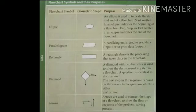Then, the third one is rectangle. Rectangle denotes the processing that takes place in the flowchart. Generally, we use to apply any type of formula in rectangle box.